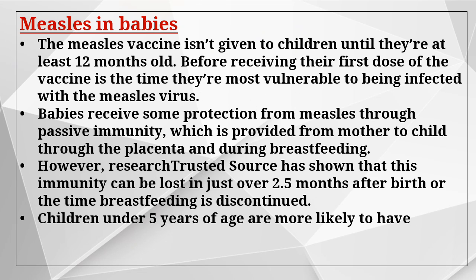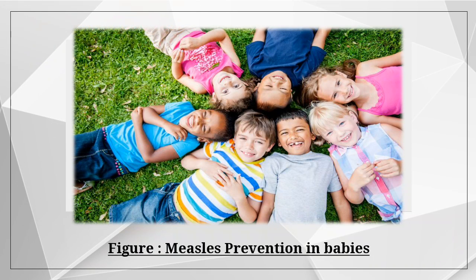The measles vaccine is not given to children until they are at least 12 months old. Before receiving their first dose of the vaccine, babies are most vulnerable to infection. Babies receive some protection from measles through passive immunity provided from mother to child through the placenta and during breastfeeding. However, research has shown that this immunity can be lost in just over 2.5 months after birth or when breastfeeding is discontinued. Children under 5 years of age are more likely to contract measles.